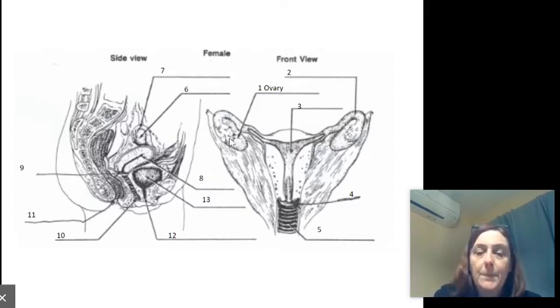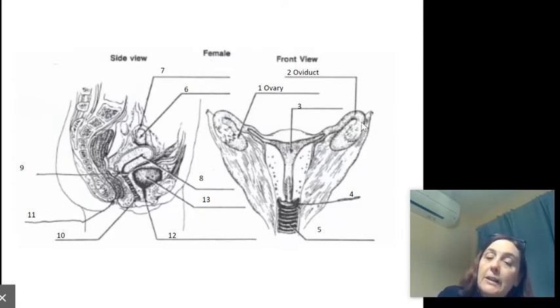The egg is released into this tube. That release is called ovulation, the moment that the egg is released out of the ovary into the oviduct. Ovi means egg, like the ovaries where eggs are made, an ovum is an egg, and the oviduct is the egg tube. That's where the egg travels.